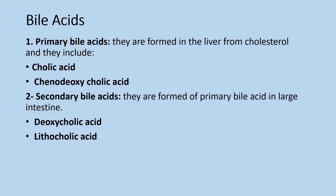Regarding bile acids and their synthesis: the primary bile acids are cholic acid — mainly called glycocholic acid and taurocholic acid — and chenodeoxycholic acid, which forms glycochenodeoxycholic acid and taurochenodeoxycholic acid, synthesized in the liver from cholesterol. These bile acids have a steroid nucleus and contain 24 carbon atoms with 2 or 3 hydroxyl groups and a side chain ending with a COOH group.